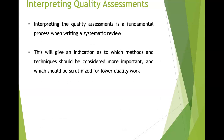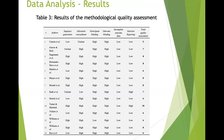Interpreting the quality assessments is a fundamental process and will indicate which methods and techniques should be considered more important and which should be scrutinized for lower quality work. For example, a methodological quality score of 10 means the findings are highly reliable, whereas a score of 5 means you need to interpret the findings with some caution.